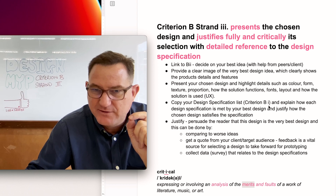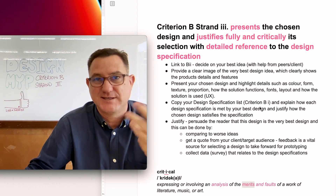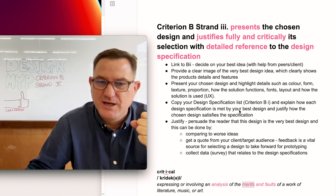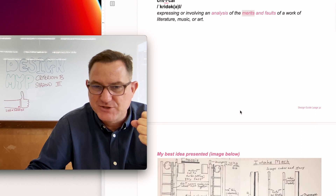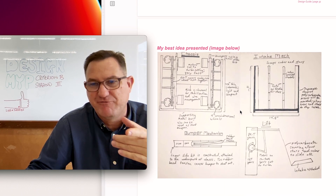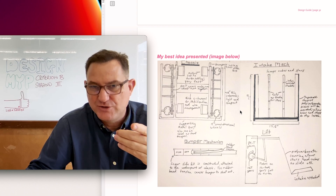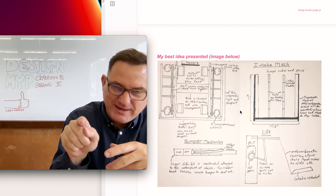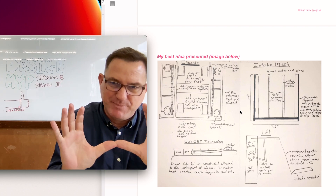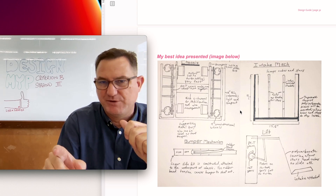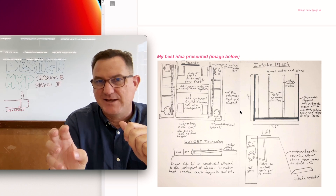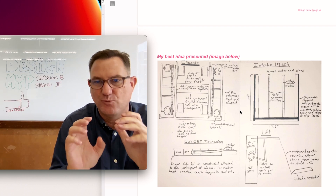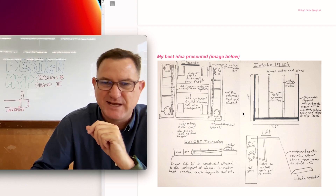Use the same design specifications once again to justify your best idea. Here's an example from a VEX robotics unit: a student has sketched their best robot idea with annotations — this is a nice presentation of their best design idea. Notice there are a couple of different perspectives, which is really good. You can clearly understand what the finished product is going to look like, and the annotations are excellent.